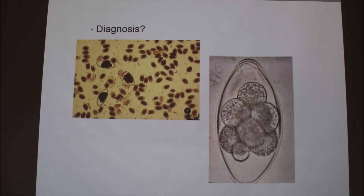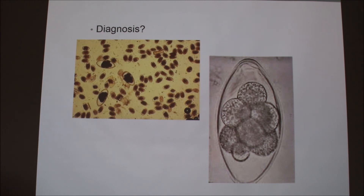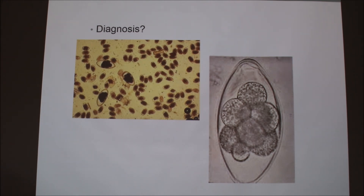In some cases, one dewormer might cover two parasites, which is why you check with your veterinarian. There can also be synergistic reactions between chemicals when combining dewormers, making them more powerful together — that's part of toxicology. A common approach is to use a broad-spectrum dewormer that treats many types of parasites at once, similar to a broad-spectrum antibiotic.